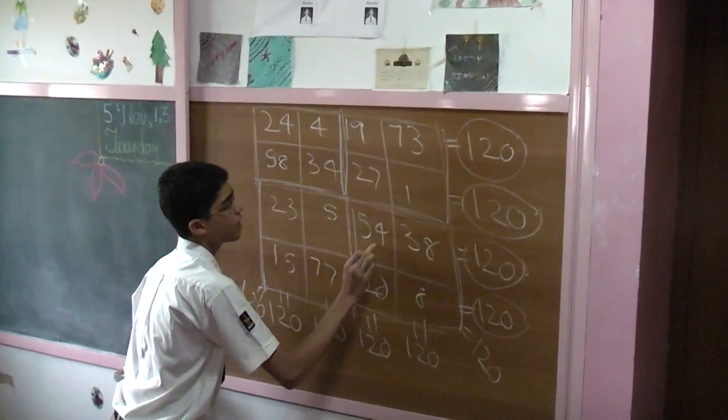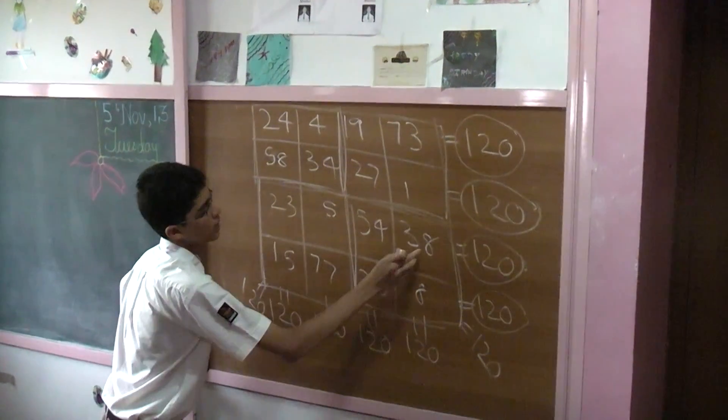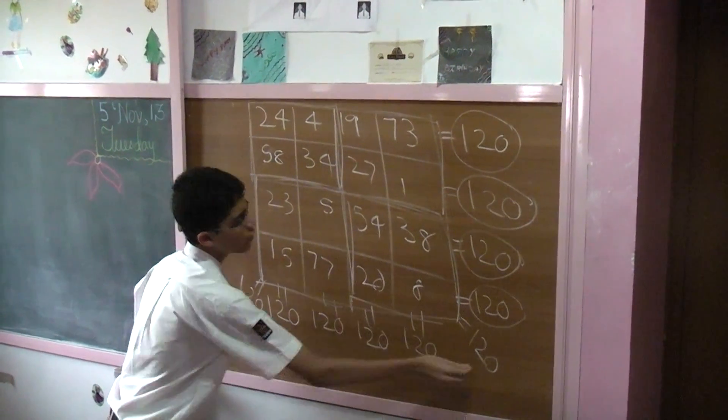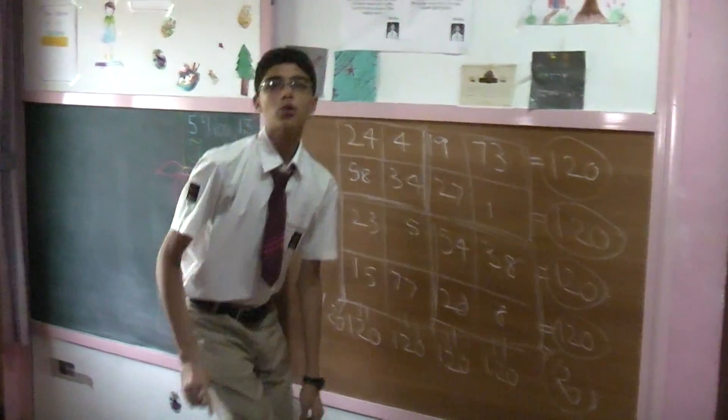And, let's take this group of four. We get 54 plus 38 is 92, 92 plus 8 is 100, 100 plus 20 is also 120.